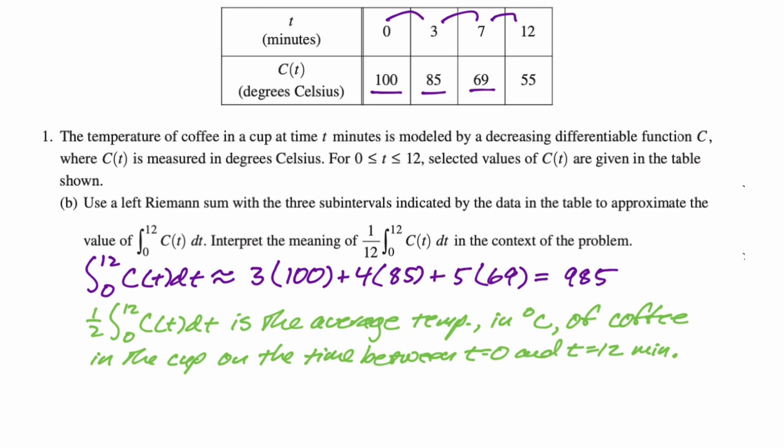The average temperature of the coffee in the cup is 82.083 degrees Celsius on the time interval from 0 to 12 minutes. So that's part B of this question. Let's take a look at part C.